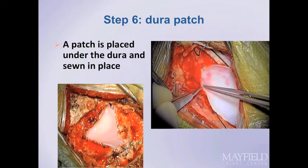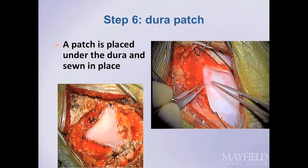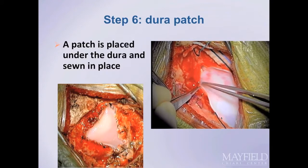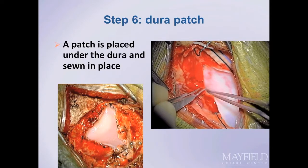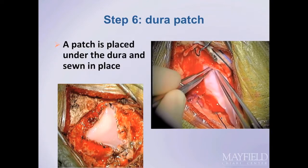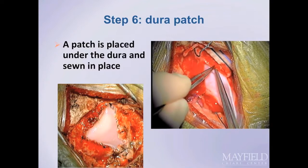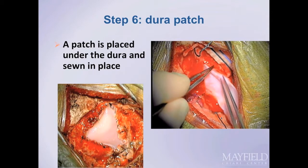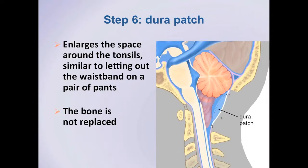This video illustrates the sewing in of a patch graft. The surgeon places the graft underneath the dura and then sutures it in place in a watertight fashion. This is similar to sewing a patch into a pair of jeans that has become too small. It provides extra room for the tonsils. A static image shows the results of a sewn-in patch graft, with the tonsils having ample room to allow proper flow of spinal fluid.